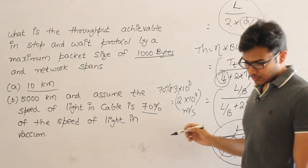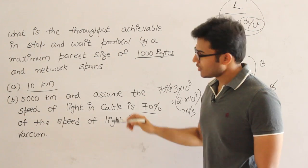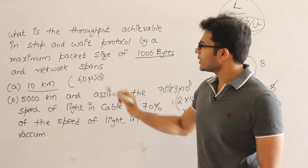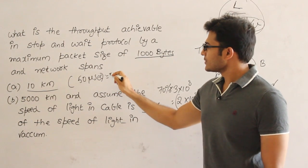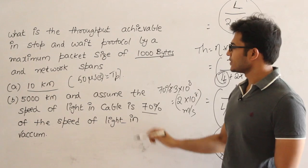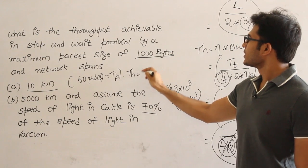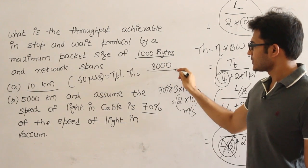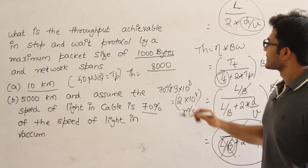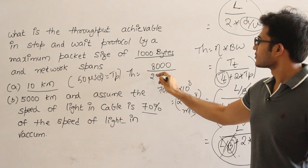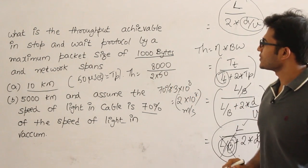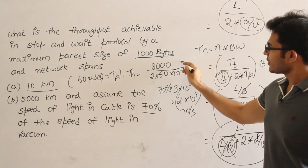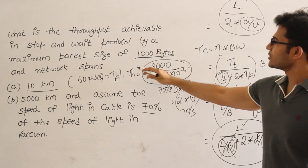For this one if you find out the d by v you are supposed to get 50 microseconds as the propagation delay. Using the propagation delay as 60 microseconds if you solve this the throughput will be L. L means 1000 bytes which is nothing but 8000 bytes divided by 2 into 50 microseconds. Micro is nothing but 10 power minus 6. You can solve this whatever is the answer. That is the answer for this one.